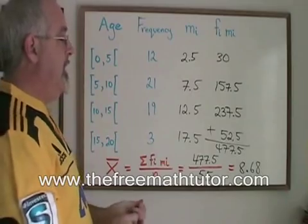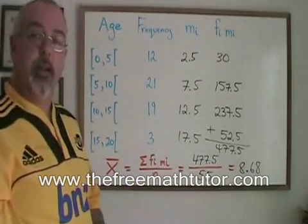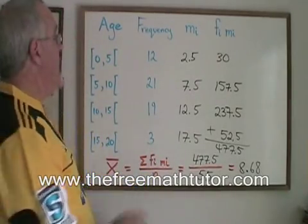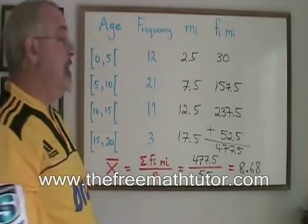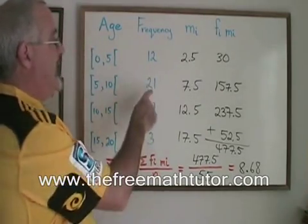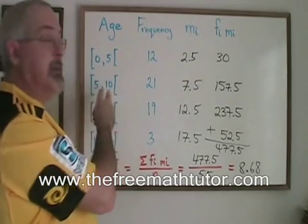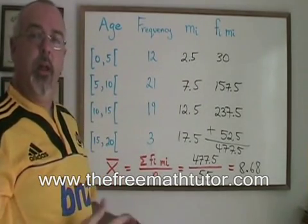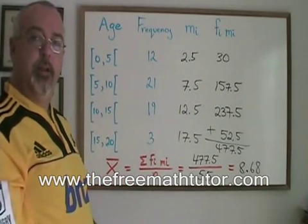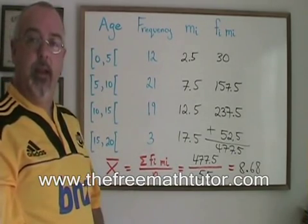This is the mean of our data, 8.68. Remember though, that the mean in this case has to be an estimate, because we don't know exactly how many of these 21 cars, for instance, are six years old, and how many are seven years old. We don't have the real data in front of us. So we use this formula to estimate the mean of the data.